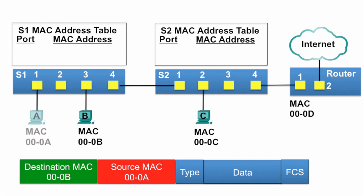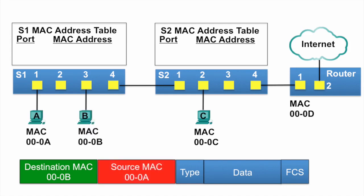PCA has an Ethernet frame to send to PCB. The source MAC address of the frame is 000A and the destination MAC address is 000B. The Ethernet frame is sent to switch S1.